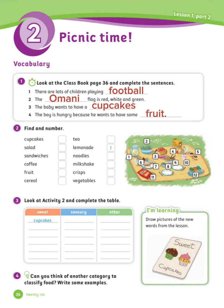Exercise number 2: Find and number. Look at the words on the left, then look at the picture on the right, then number the food words. Let's see the answers. Number 1 is done for you: Lemonade.